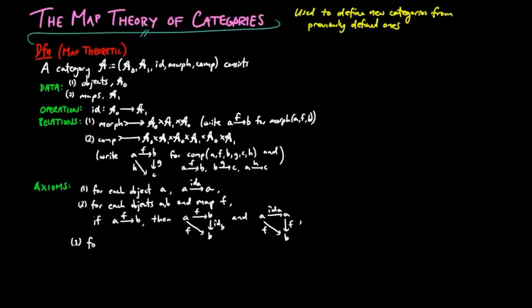Axiom 3: For each objects A, B, C, and D, and maps where F is a morphism from A to B and G is a morphism from B to C, there exists a unique map H such that H is a morphism from A to C and the following is a commutative triangle.